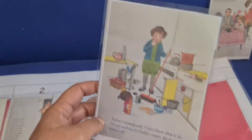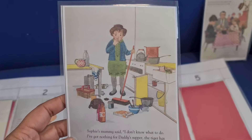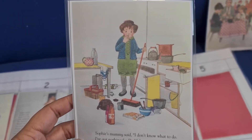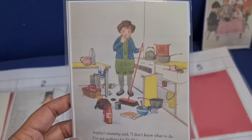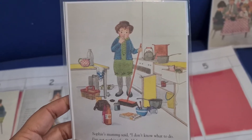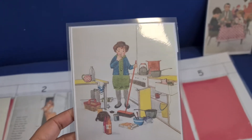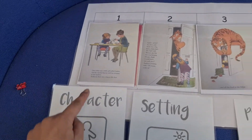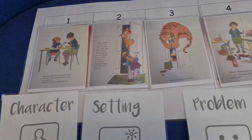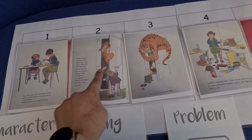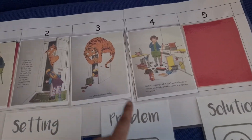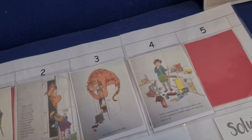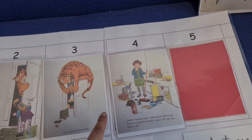Oh no! Here's the biggest problem — the tiger has gone home and left a lot of mess. There's Sophie's mummy and all the mess from the tiger, and there's no more food. So we have our character Sophie, we have our setting which is Sophie's house, and our problem is that the tiger who came to tea has eaten all of the food and made a very big mess.